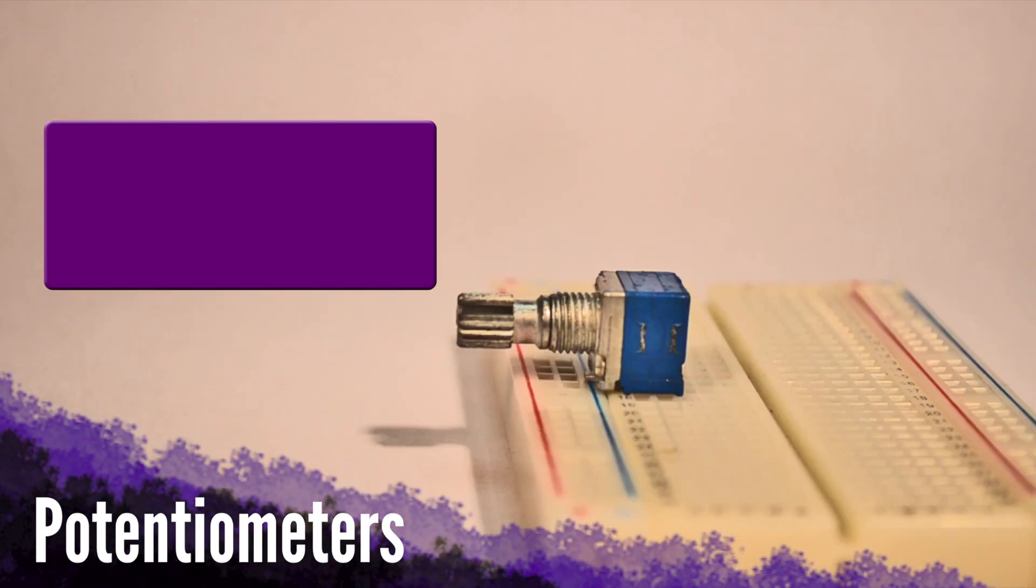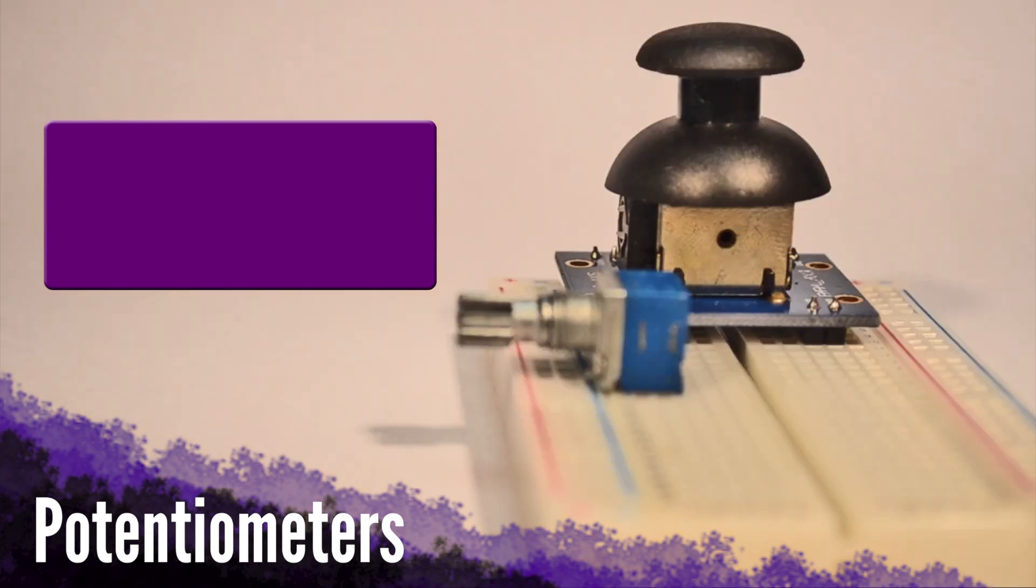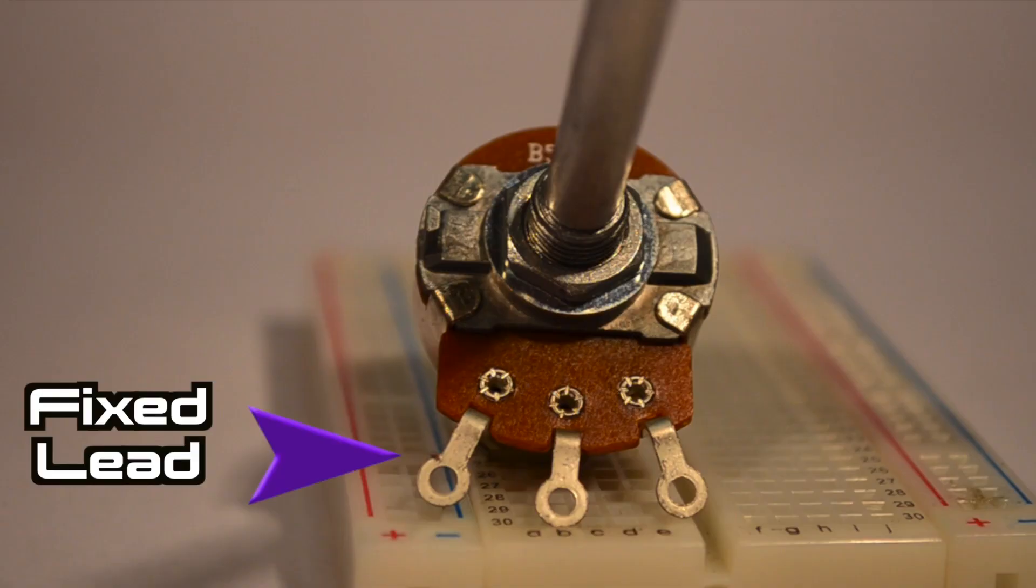As always, this resistance value is measured in ohms. Just like fixed resistors, potentiometers have two leads on either end of a section of semi-conductive material.